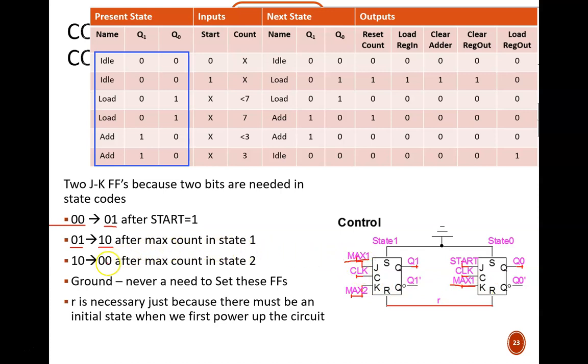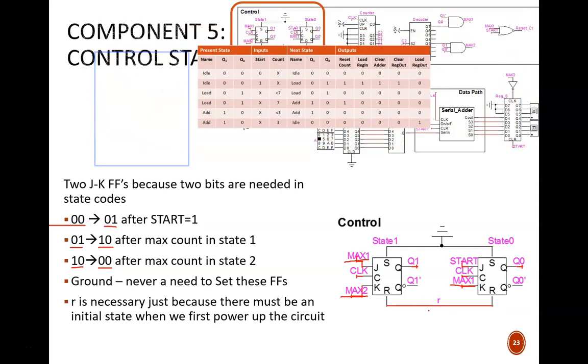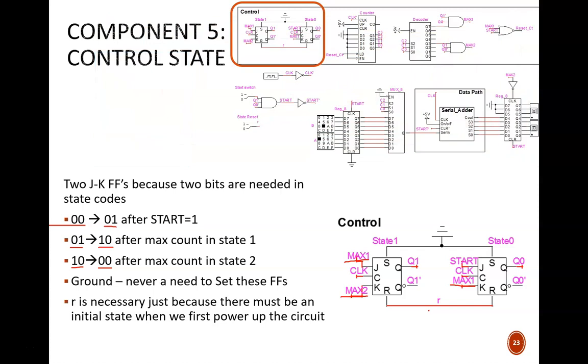When in add mode, 10, it should change to idle, 00, after the add phase is complete. Similar to max1, the variable max2 identifies this point from the counter, and so it is used to reset the leftmost flip-flop. Note that this little R signal here would not be used in normal operation. We only need it upon powering up the circuit to provide initial values to the flip-flops.